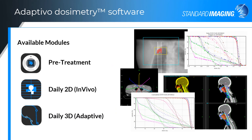Moving to our second complement for throughout-treatment patient-specific QA, Adaptivo dosimetry software assists clinical users in flagging or triggering when a patient plan will need to be adapted. Changes will more typically be thought of as changes in patient anatomy, but one should not neglect systemic or large single fraction setup errors or beam delivery variation. There are three modules: pre-treatment, daily or throughout-treatment 2D (referred to as in vivo), and throughout-treatment or daily 3D (referred to as adaptive). I will focus on the throughout-treatment modules.